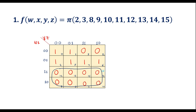Now let me write the expression for this group. In max terms, a 1 corresponds to the complement of the variable and a 0 corresponds to the direct variable. In these two rows, 1 is common, so 1 is with respect to w-bar. The value of this group is w-bar.